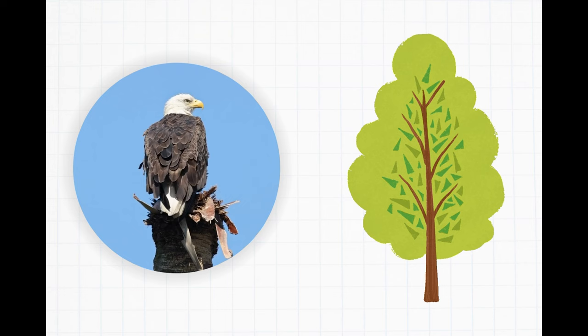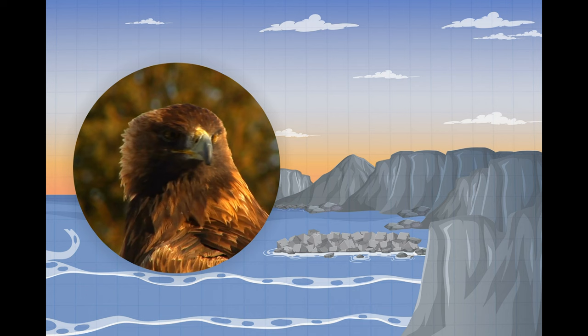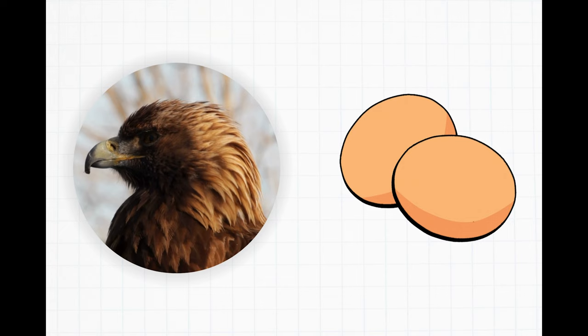For example, bald eagles prefer to build their nests in trees, but golden eagles generally prefer to build their nests on cliff sides. In addition, due to their larger size, most eagles only lay 1 to 2 eggs at a time.